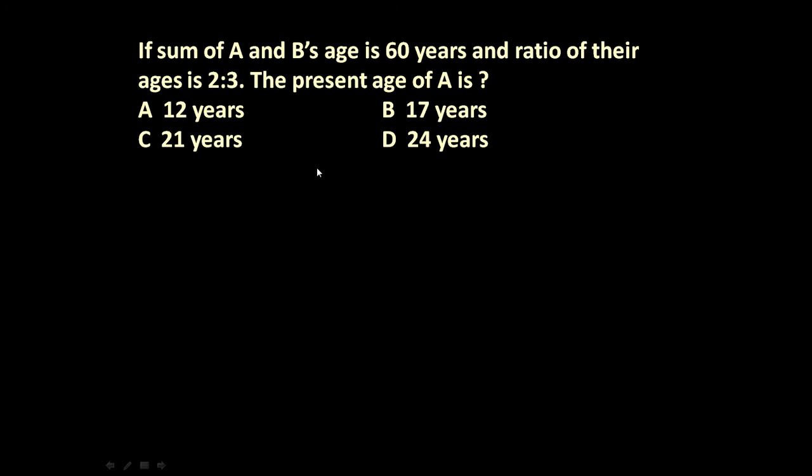Here the given problem is: if sum of A and B's age is 60 years and ratio of their ages is 2 to 3, the present age of A is? Again, there are two statements: sum of A and B's age is 60 years and ratio of their ages is 2 to 3, the present age of A is. So friends,